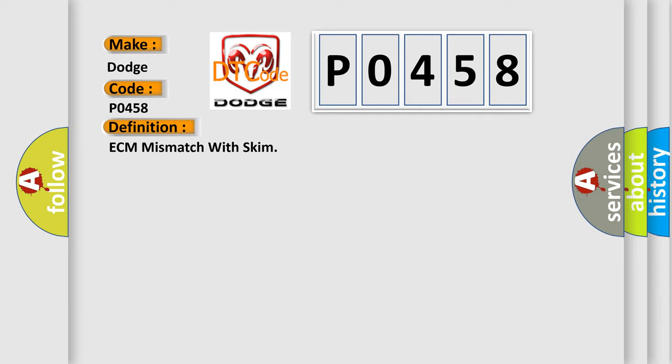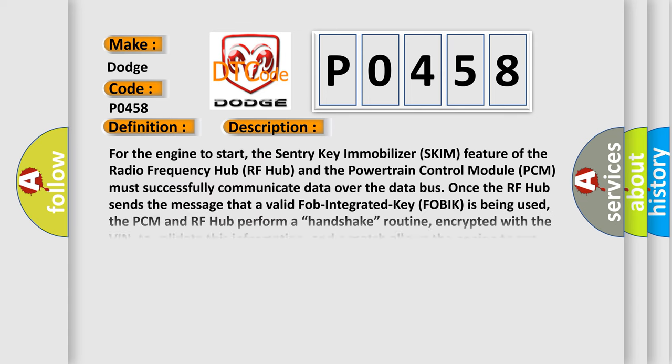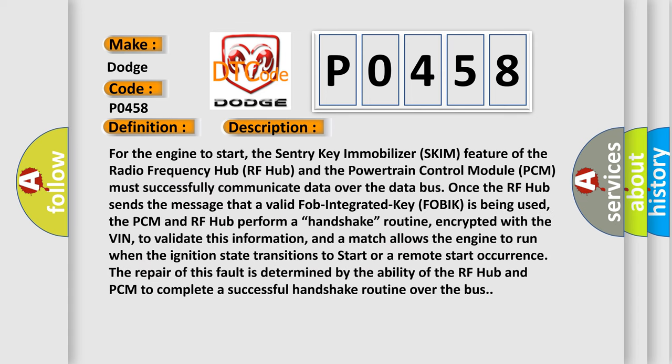Here is a short description of this DTC code. For the engine to start, the Sentry Key Immobilizer SCIM feature of the Radio Frequency hub (RF hub) and the Powertrain Control Module (PCM) must successfully communicate data over the data bus. Once the RF hub sends the message that a valid FOB Integrated Key (FOB IK) is being used, the PCM and RF hub perform a handshake routine encrypted with the VIN to validate this information. A match allows the engine to run when the ignition transitions to start or during a remote start. The repair of this fault is determined by the ability of the RF hub and PCM to complete a successful handshake routine over the bus.